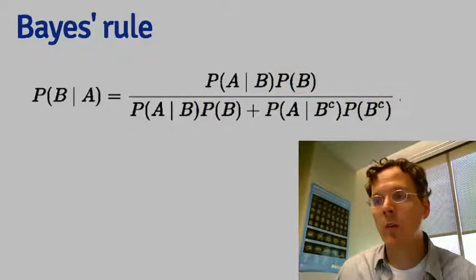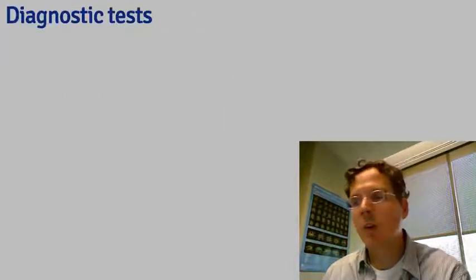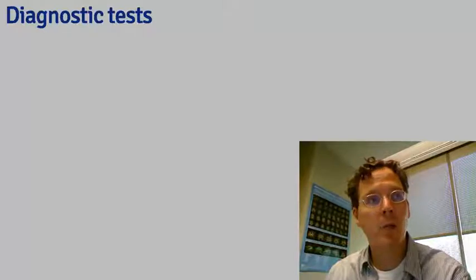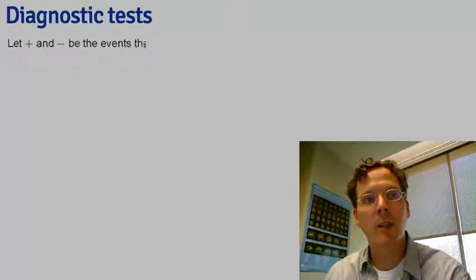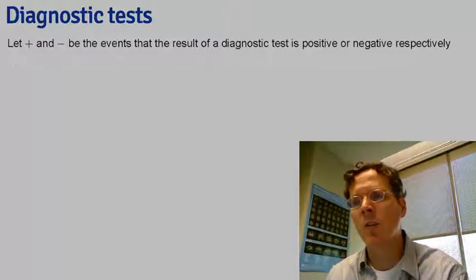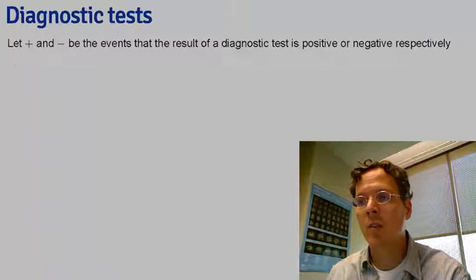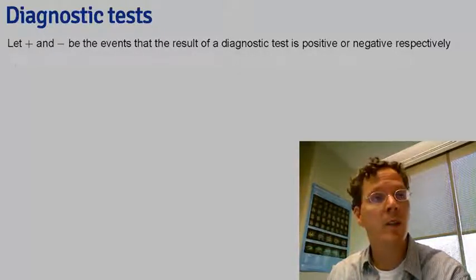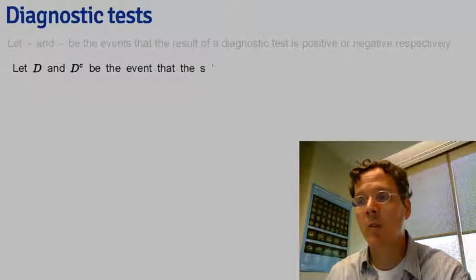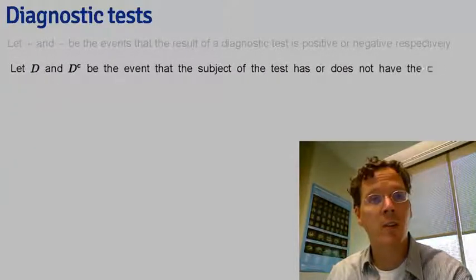This is quite useful in the context of diagnostic tests. Let's let plus and minus be the event that the test is positive or negative — think of a test for a disease, where plus means the test says the person has the disease and minus means they don't. And let D and D complement be the event that the person either does or does not have the disease respectively.